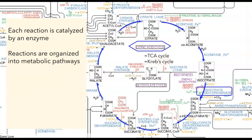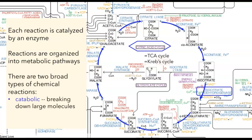The last big-picture point is that there are two broad types of chemical reactions. Sometimes we take a large molecule and break it down. For example, here we're taking citrate, a six-carbon compound, and converting it into oxaloacetate, a four-carbon compound. We've broken it down, releasing carbon dioxide in the process. Those kinds of metabolic reactions are called catabolic.